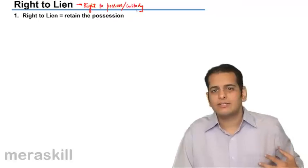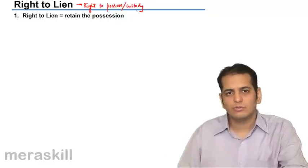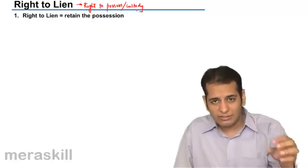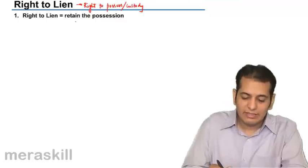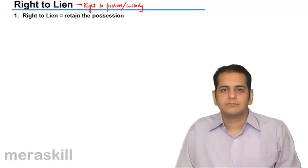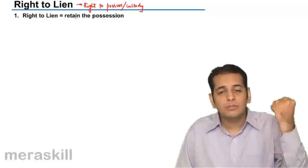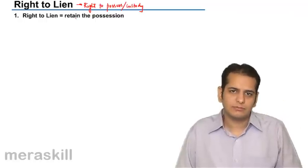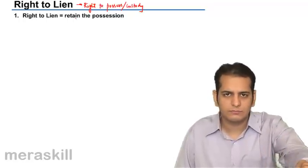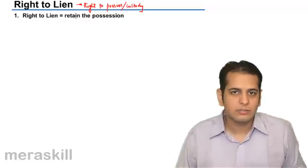The seller is exercising his right over the goods. He has already made the sale, so he should ideally be giving the goods to the buyer, but he exercises his right to lien. He is retaining the possession — remaining continuously in possession. He is not parting with the goods, not leaving them, not giving them to the buyer, but remaining in continuous possession.